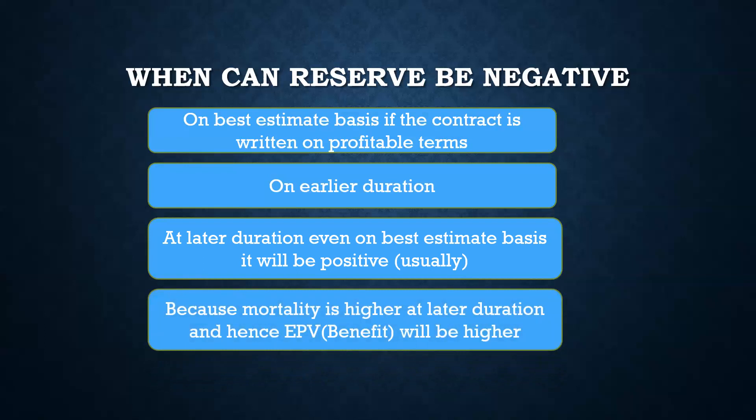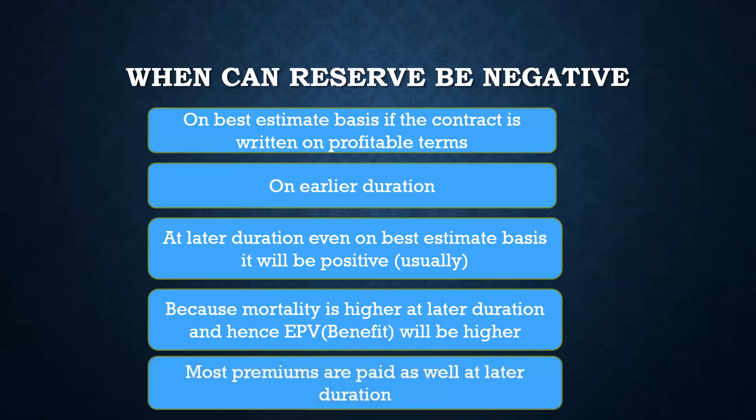Because mortality is higher at later duration, the expected present value of benefits would be higher. Also, most premiums are paid by that time — for example, suppose the term of the product is 20 years and you are standing on the 15th year. Only five premiums are left, and because we are calculating on a prospective basis, we are only calculating what we are going to receive in the future, so only the discounted value of five premiums would be calculated. However, the death benefit would be very high because mortality has gotten higher. So the reserve would be positive. This is the entire reason why reserve can be negative when you are writing the product on a best estimate basis at earlier durations. Eventually, the reserve would be negative, then at a point of time, the reserve would start swinging from negative to positive territory, and finally at later duration, the reserve would be positive.